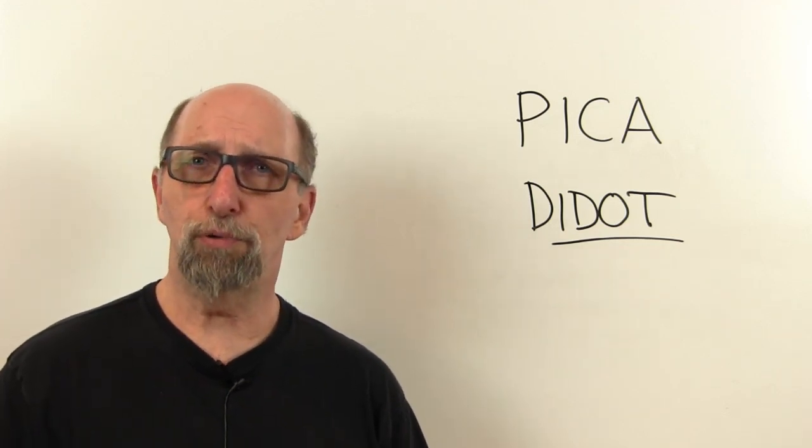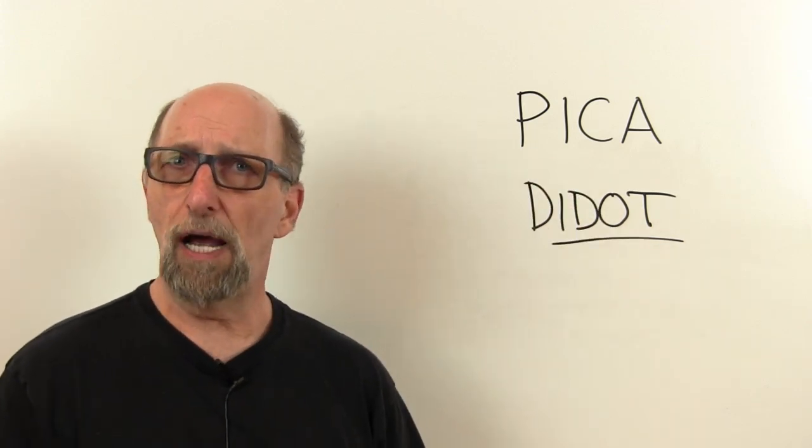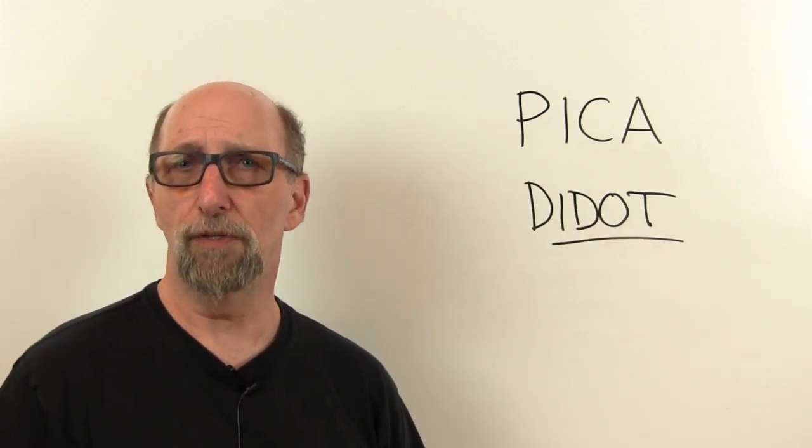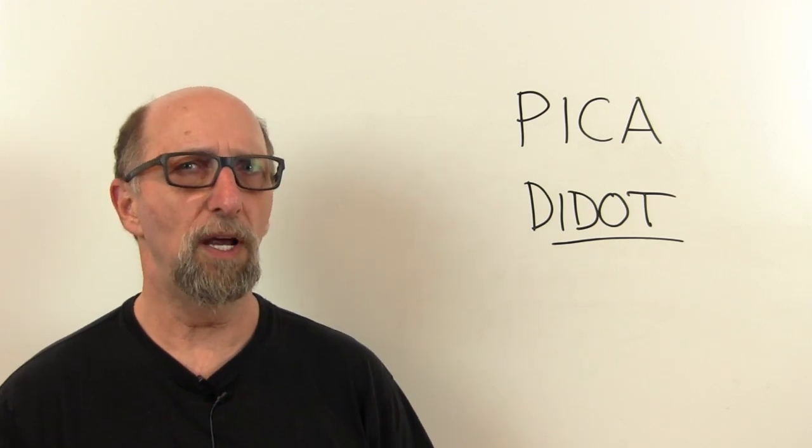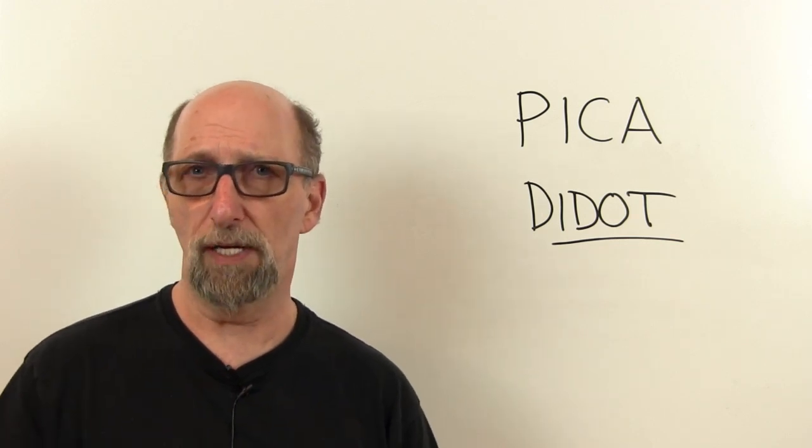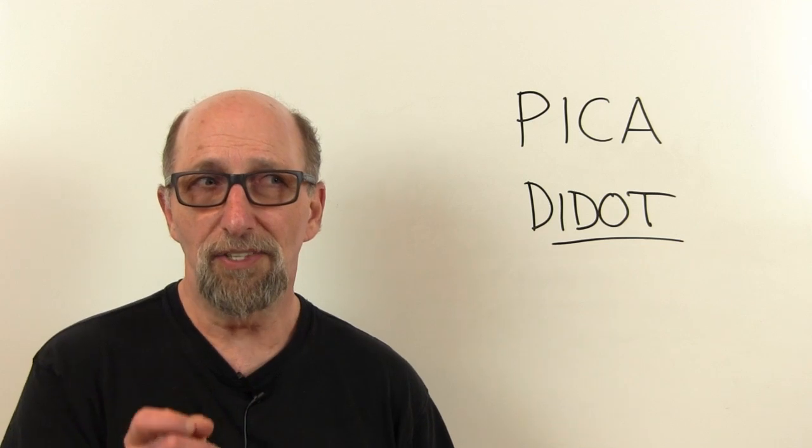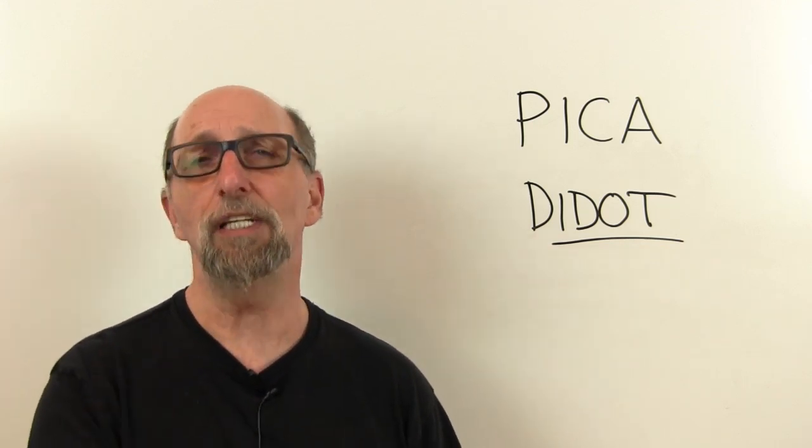For many years, printers used this Pica system, and each Pica was about a sixth of an inch. It wasn't quite a sixth of an inch—it was a tiny bit less. So if you multiplied the size of a Pica by six, you would end up with something just a little bit less than an inch.